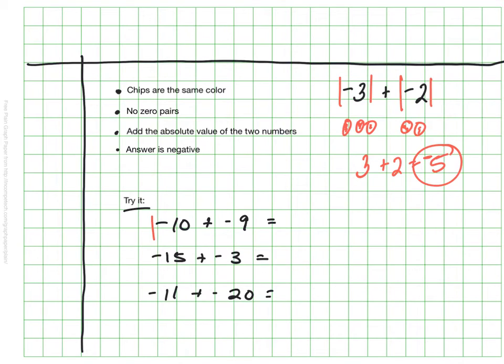How'd you do? Did you notice that the absolute value of negative 10 is 10? The absolute value of negative 9 is 19. So your answer is 19, but they're all negatives. So it's negative 19. This one should have been negative 18, and this one should have been negative 31.